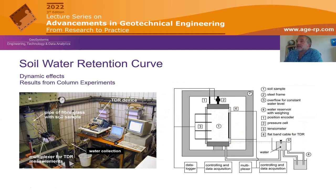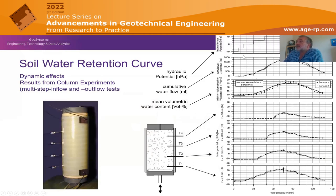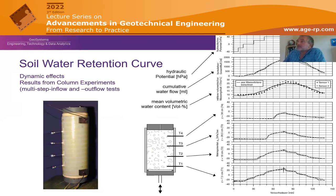Now presenting one of the mysteries: in the column experiment, a multi-step hydraulic potential was applied — starting with suction at the bottom, then switching to a positive boundary condition, and back to suction. The cumulative inflow and outflow were recorded, along with mean water content from the sensors and observations from the four tensiometers. Attempts to back-analyze the soil water retention curve with a numerical model failed due to a specific reason that will be explained.